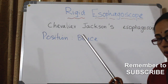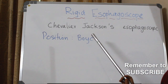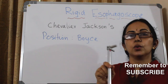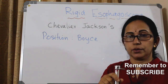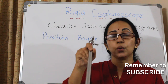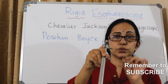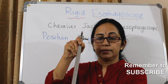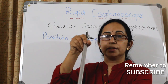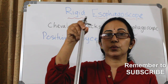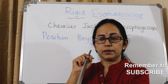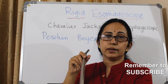The position used is the boy's position, also called the barking dog position or sniffing the morning air position — similar to that explained in the bronchoscopy class. Holding of the esophagoscope is very important. Use your dominant hand. Hold the esophagoscope like a pen. The non-dominant left hand acts as support at the lower end, helping with introduction and removal.